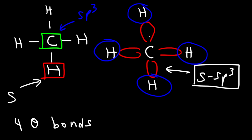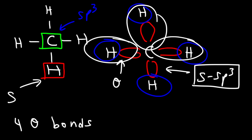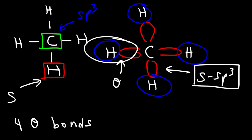Anytime you have an overlap of atomic orbitals, you get a sigma bond. So methane has four sigma bonds — or equivalently, four single bonds or four covalent bonds. You can describe them any of those three ways.